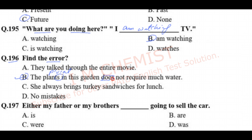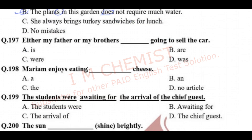The error in option B is subject-verb agreement. The subject 'plants' is plural, so the verb 'does' is incorrect. We use 'does' with a singular subject like 'he', 'she', or 'it', but with a plural subject we should use 'do'. The correct sentence is: 'The plants in the garden do not require much water.' Option B is the answer.